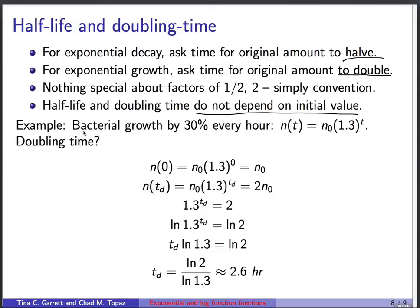So suppose we have our previous problem, where there's bacterial growth that increases by 30% every hour, described by the function n(t) = n₀(1.3)^t. We can ask, what is the doubling time? We can note that at time equals 0, the value of the function when we plug in 0 in the exponent is n₀(1.3)^0. That's just n₀. And then we can ask, what is the unknown time? We'll call it t_d for doubling time, at which we have twice what we started with. So plugging into the function, that's n₀(1.3)^(t_d) equals twice what we started with. We can cancel out a factor of n₀ on each side to get 1.3^(t_d) = 2.